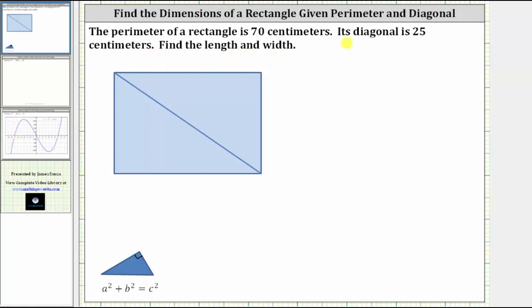The perimeter of a rectangle is 70 centimeters. Its diagonal is 25 centimeters. Find the length and the width.